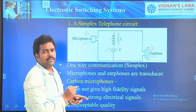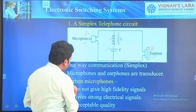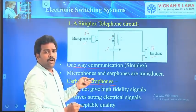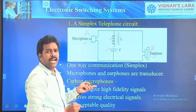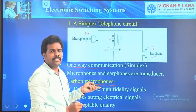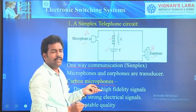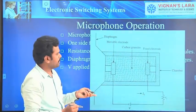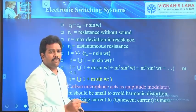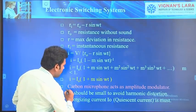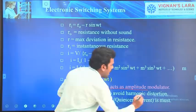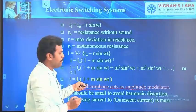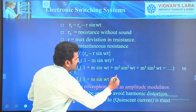In the last class, we discussed about the operation of the carbon microphone and came to one conclusion: this carbon microphone undergoes amplitude modulation — that means it acts like an amplitude modulator. In this class, we will discuss the derivation and prove that mathematically.